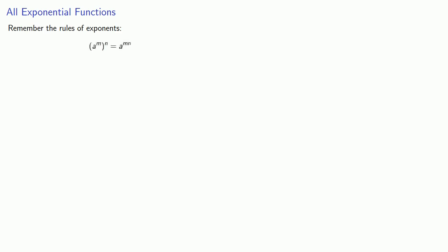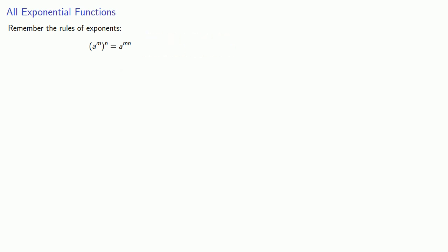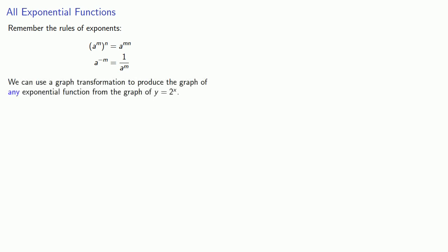We can get all exponential functions as long as we remember the rules of exponents. The two important rules are: a to the power m to the power n equals a to the power mn, and a to the power minus m equals 1 over a to the power m. With these rules we can use a graph transformation to produce the graph of any exponential function from the graph of y equals 2 to the power x.